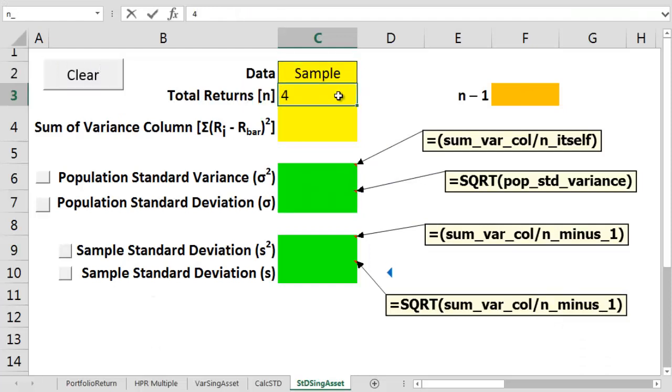So that's sample, n equals 4. The sum of the variance column equals 182.373. So we divide that 182.373 by n minus 1, or 3, to get a sample variance of 60.79. We then square root this variance to get a sample standard deviation of 7.80.